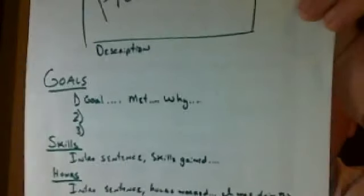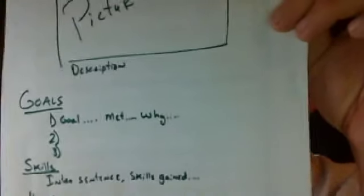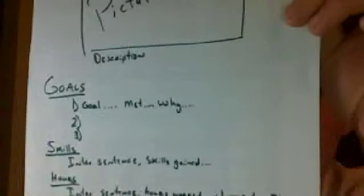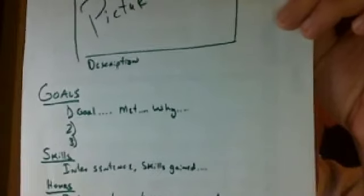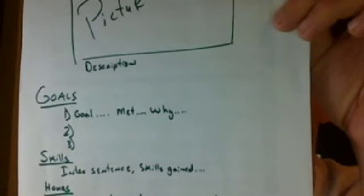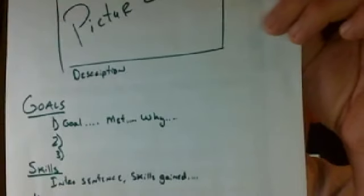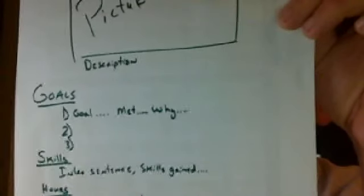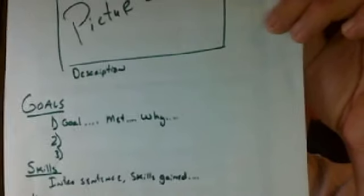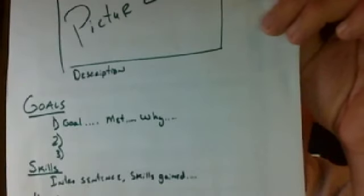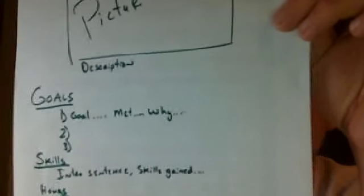Some of you have two goals, some have three — do this for each one. If you didn't meet your goal, that's perfectly fine. Goals are set not just to meet but to try to achieve. It's a hard concept because if you set something you're definitely going to achieve, it's not really a goal — it's just something you do.